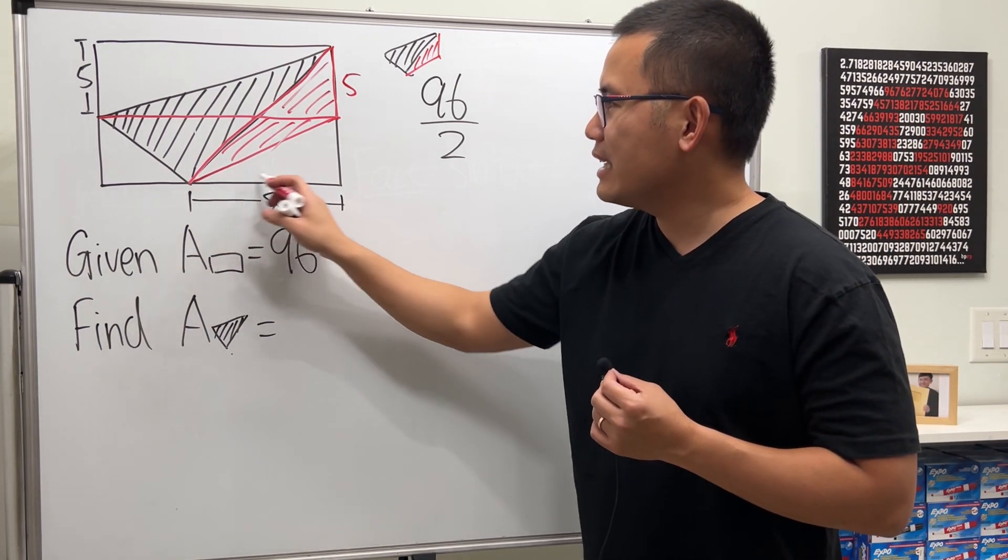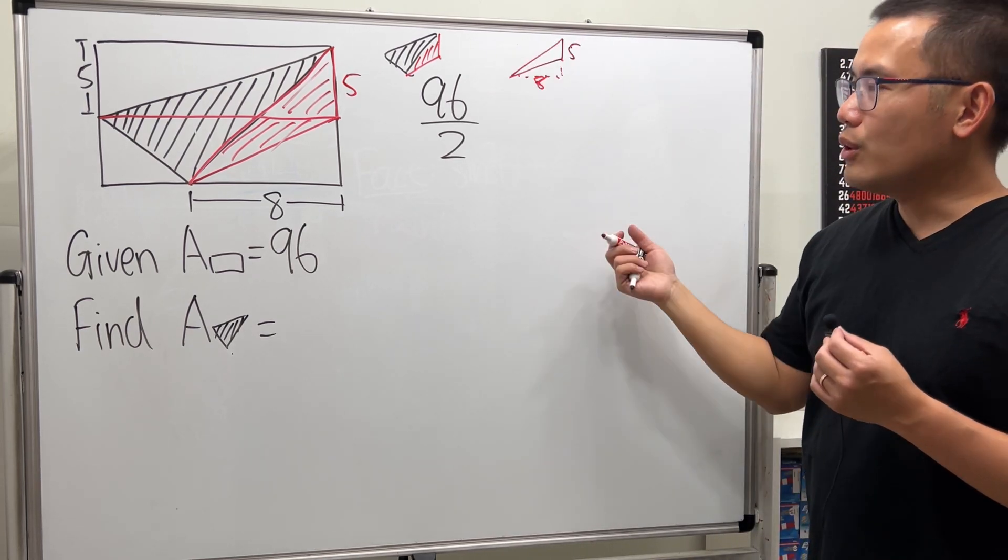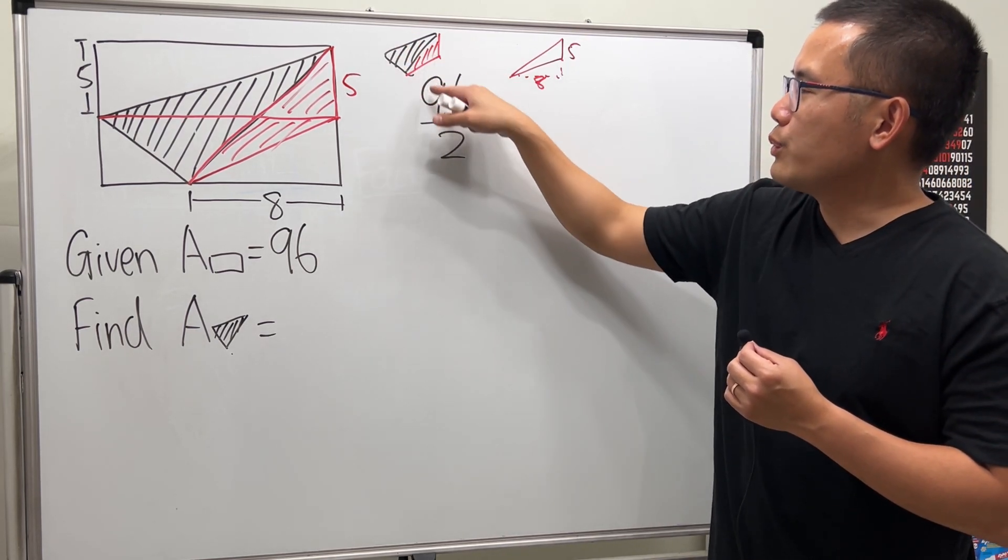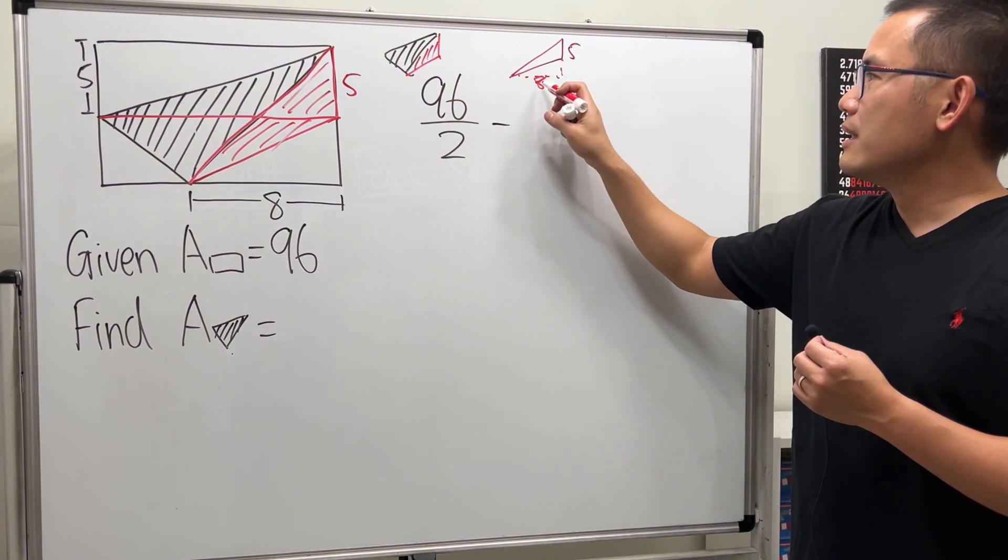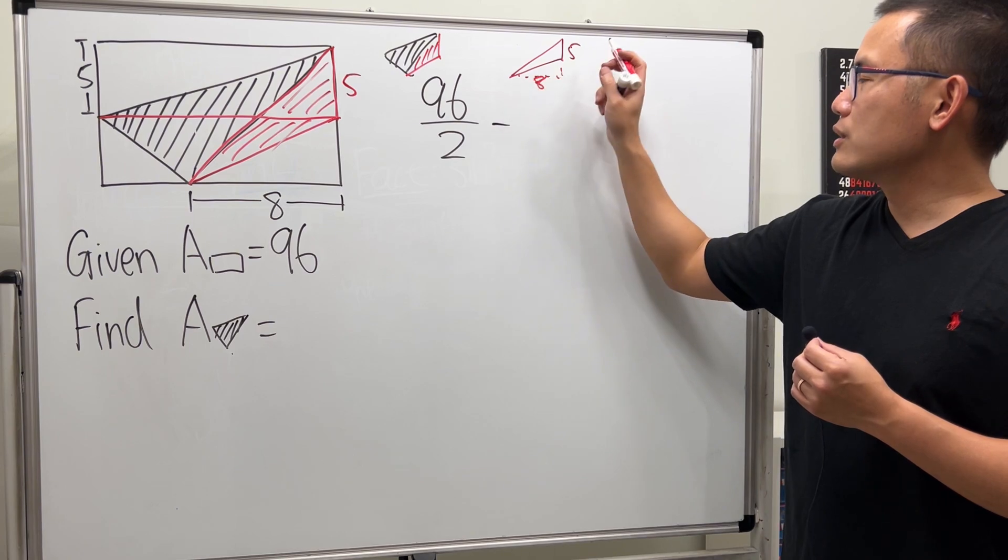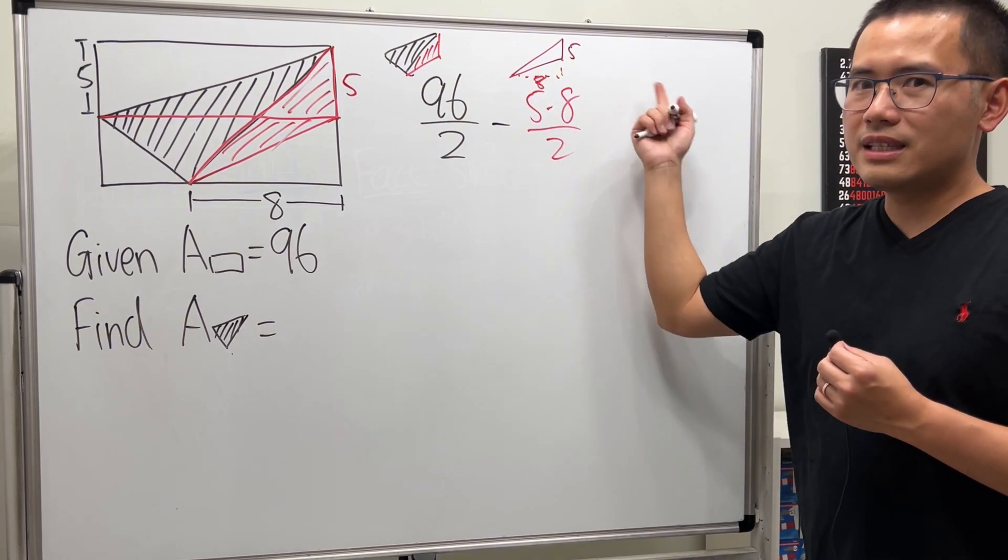So all we have to do is take the black and red which is 96 over 2, and then just go ahead and minus this triangle, which is just 5 times 8 and divided by 2. Base times height divided by 2.